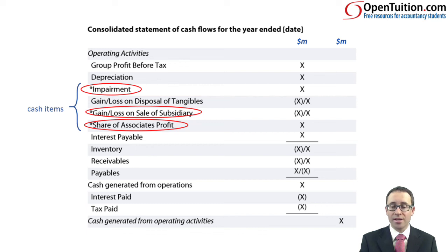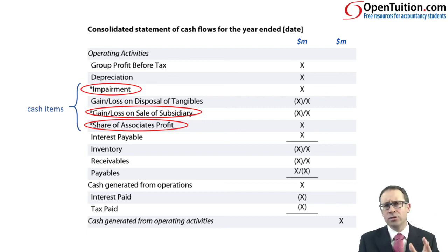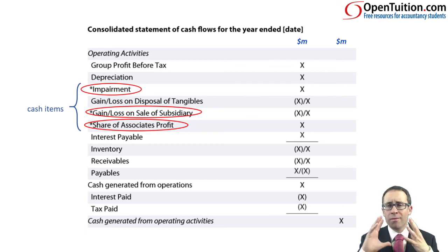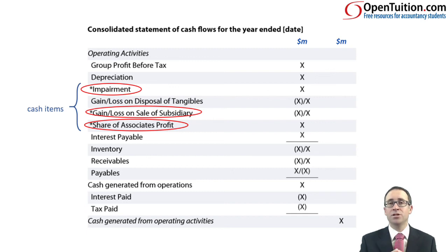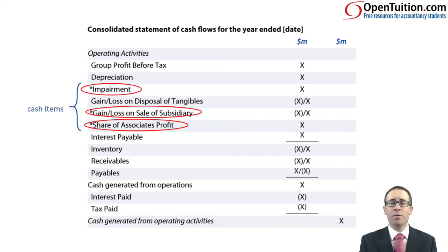A lot of the other things dotted around are all exactly the same as F7 — gain or loss on disposal of tangibles, interest payable adjustment, inventory, receivables, payables, interest paid, tax paid. So if you've mastered the technique of cash flow from F7, you're going to be in a really good position to master the group statement of cash flows. I'll see you in the next video when we begin to introduce the first aspect of group cash flows — the dividend paid to the non-controlling interest.